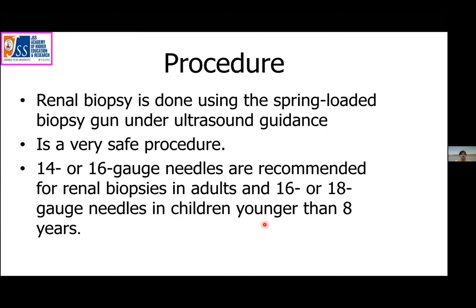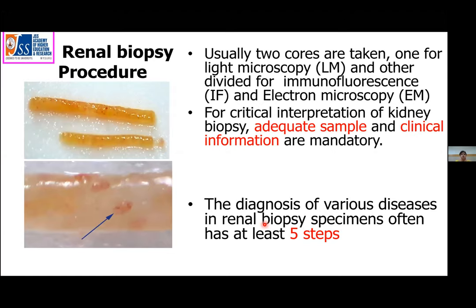Renal biopsy is done using the spring-loaded biopsy gun under ultrasound guidance. It is a very safe procedure. 14 or 16 gauge needles are used in adults and 16 or 18 gauge needles in children younger than 8 years. Usually two cores are taken: one for light microscopy and the other divided for immunofluorescence and electron microscopy. In our center, we don't perform electron microscopy routinely; if needed, we send the paraffin-embedded block. For immunofluorescence, if transit time is short, tissue is put in saline; if longer, we use Michael's transport media.